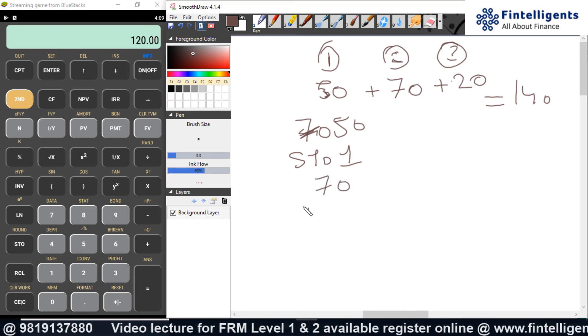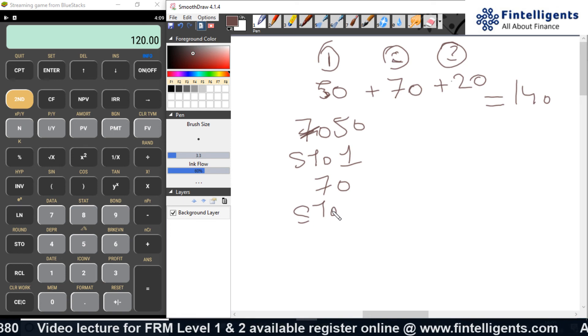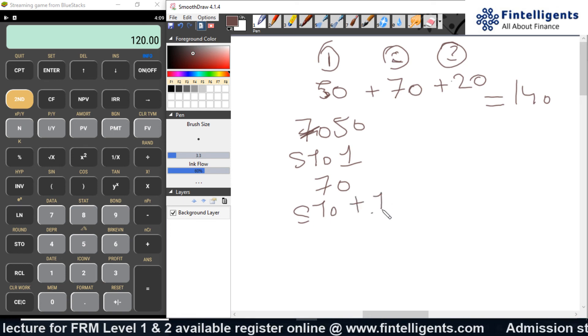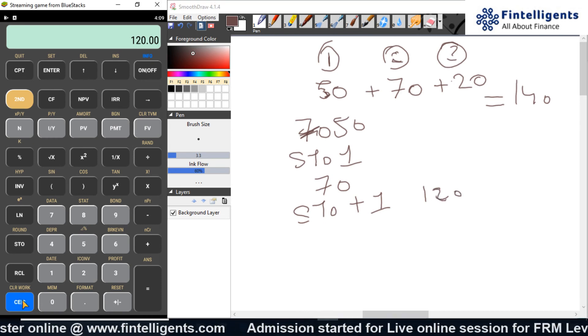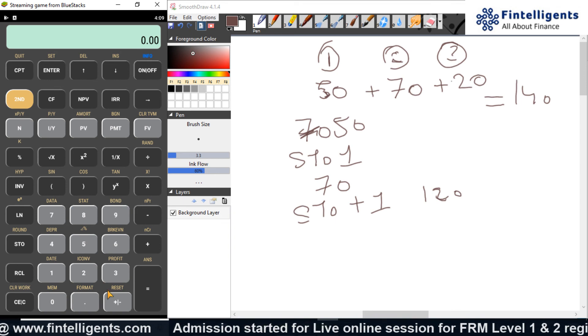So, I inputted first 70. Then, STO plus 1. This will give me an answer of 120. That is the value stored currently in your 1 number. I did the third calculation which is 20.